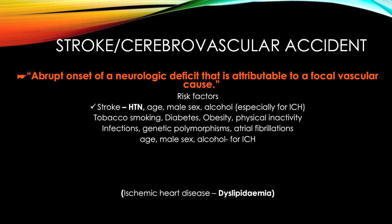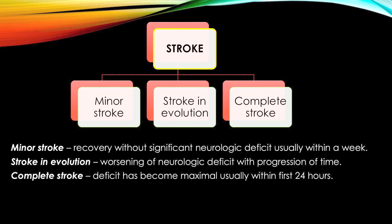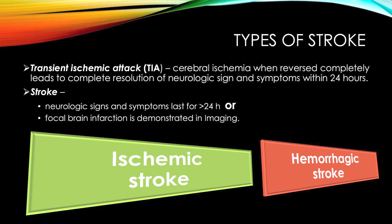For ischemic heart disease the main risk factor is dyslipidemia, whereas for stroke it is hypertension. Stroke can be categorized as minor stroke, stroke in evolution, or completed stroke. Minor stroke has complete recovery within a week. Stroke in evolution is progressive, with symptoms increasing day by day. Completed stroke is where maximum deficit has occurred and damage is no longer progressing.